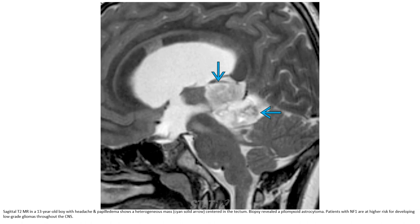T2 FLAIR in a 13-year-old boy with headache and papilledema shows a heterogeneous mass centered in the tectum; biopsy revealed a pilocytic astrocytoma. Patients with neurofibromatosis type 1 are at high risk for developing low-grade gliomas throughout the CNS.